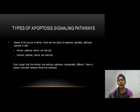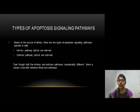Now, the types of apoptosis signaling pathways. Based on the source of stimuli, there are two types of apoptosis signaling pathways operating in the cell. First, the intrinsic pathway, in which stimuli are internal. Second, the extrinsic pathway, in which stimuli are external. Even though both the intrinsic and extrinsic pathways are considerably different, there is always a cross-link between these two pathways.